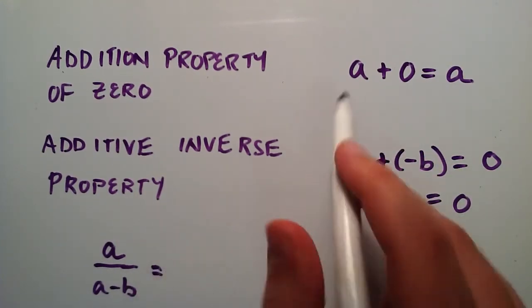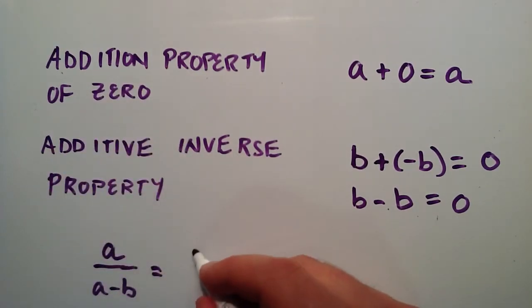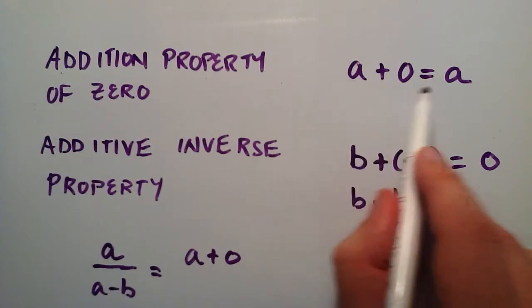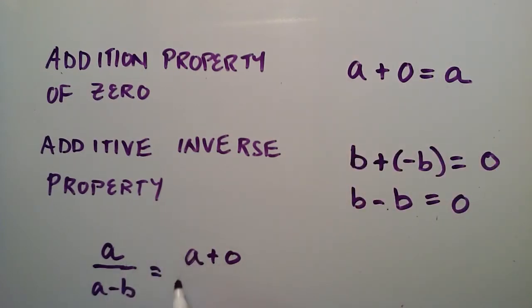So the first step is I'm going to use the addition property of zero, and so we have a plus zero, and by this property this is still equal to a, so I didn't change the top. And we're dividing that by the same thing on the bottom.